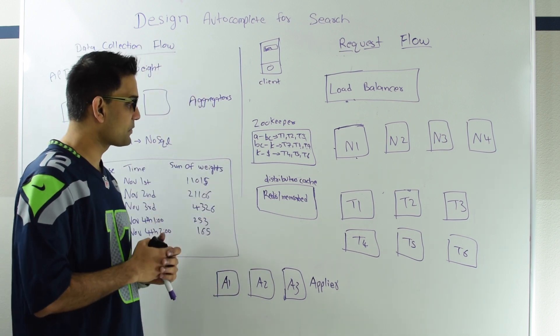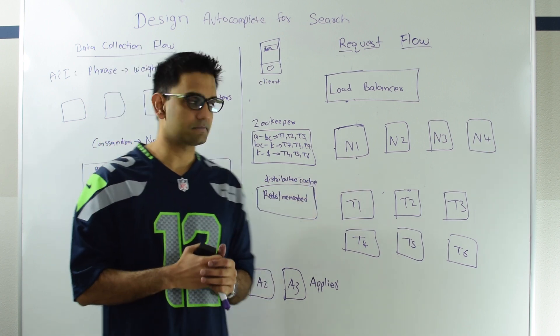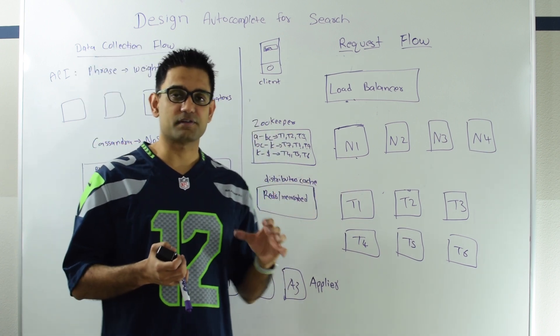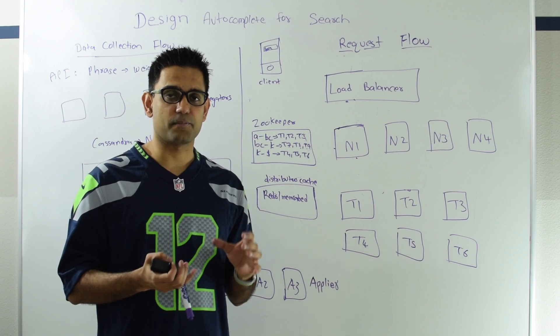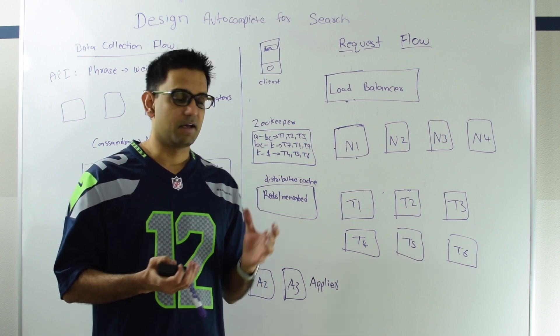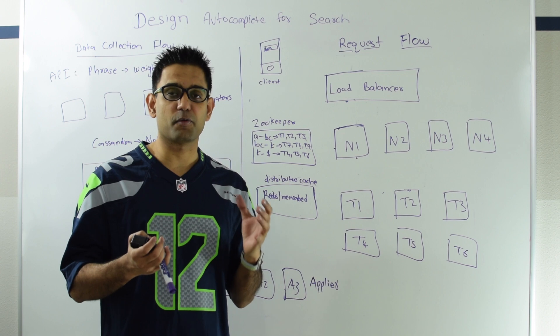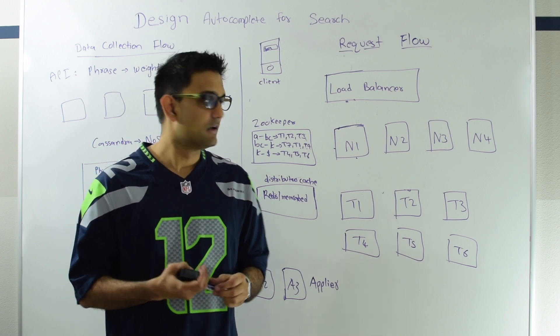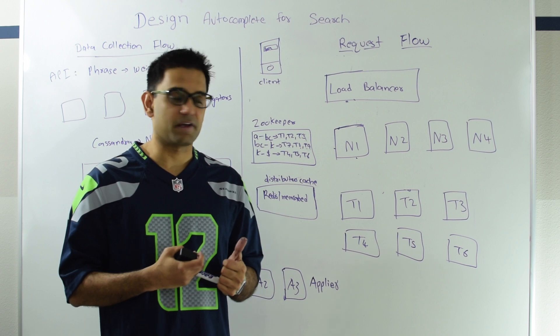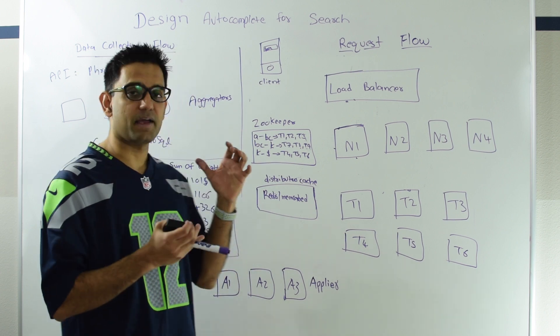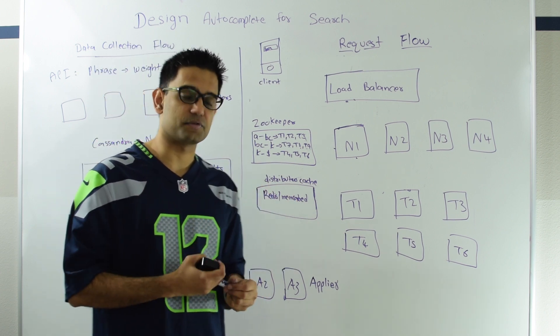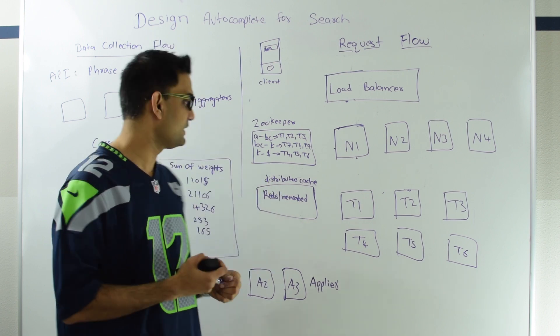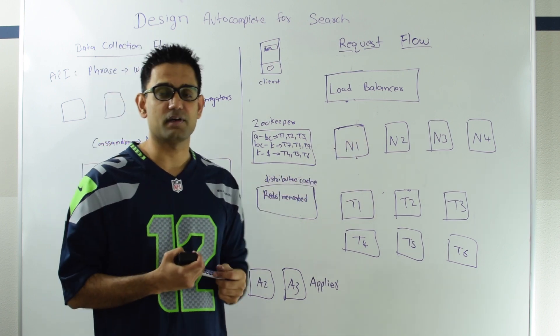There are two other optimizations I wanted to talk about in the request path. The first is, if a user is searching for a query, for a prefix from say Seattle, it would be worth caching some of that result in a CDN in Seattle. So CDN is content delivery network, and CDN is usually close to the end user. So having data in the CDN, the request can just be served from the CDN instead of coming all the way to the data center.